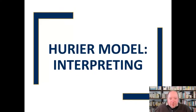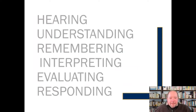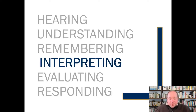In this video, we want to continue on with our examination of the HURRIER model of listening by zeroing in on interpreting. As you recall, HURRIER is just the first letter of each of these things — H-U-R-I-E-R — for hearing, understanding, remembering, interpreting, evaluating, and responding. So in this particular instance, we're looking and honing in on that interpreting aspect of listening.